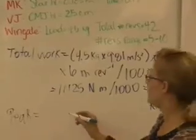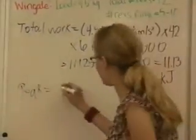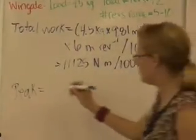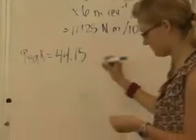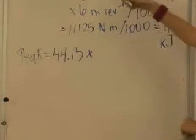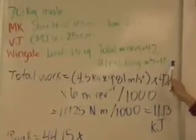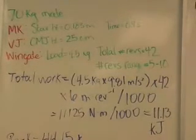We're going to take the force in newtons, which again is 4.5 times 9.81, which is equal to 44.15 times the peak number of revolutions. This individual's revolutions ranged from 5 to 10. So at his worst 5-second period, he had 5 revolutions.